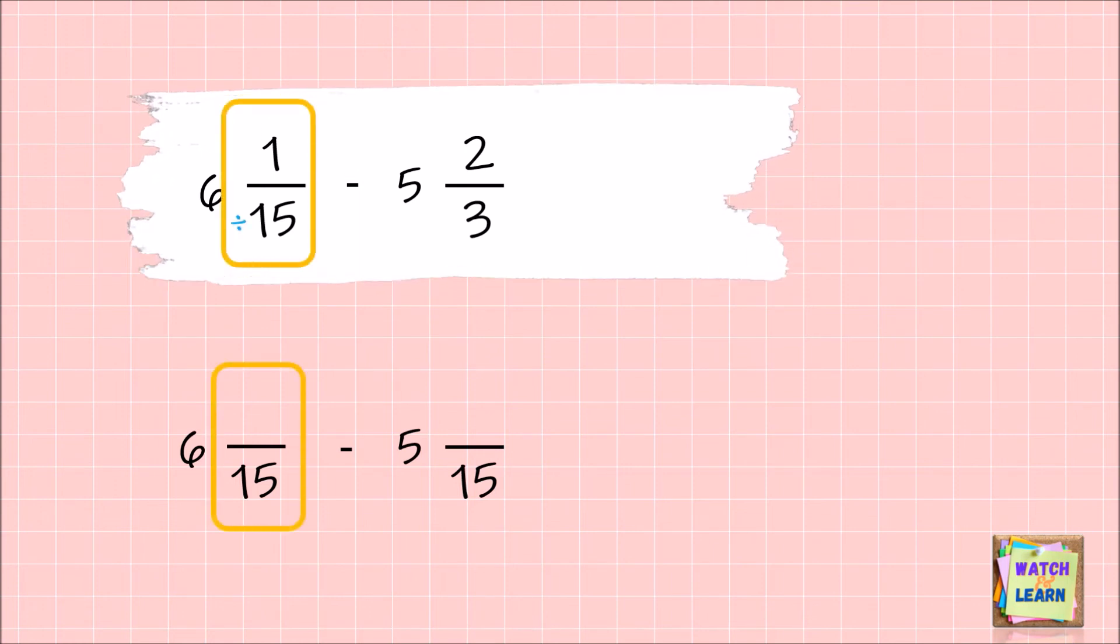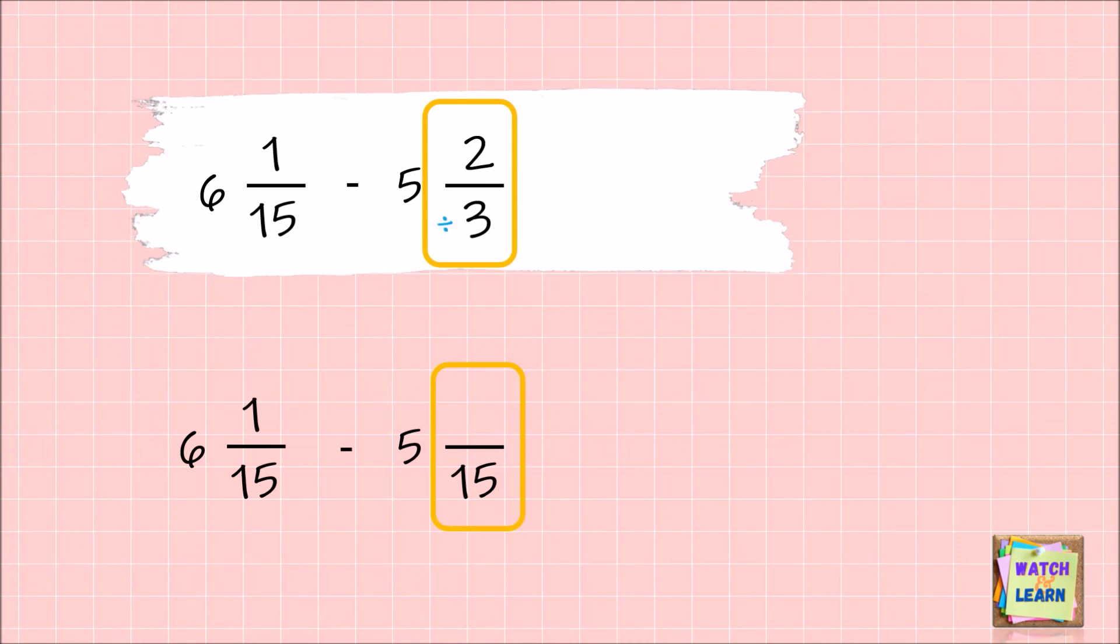15 divided by 15 is 1, 1 times 1 is 1. 15 divided by 3 is 5, 5 times 2 is 10.